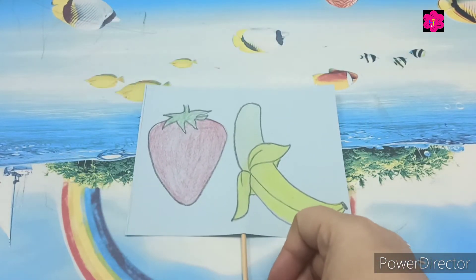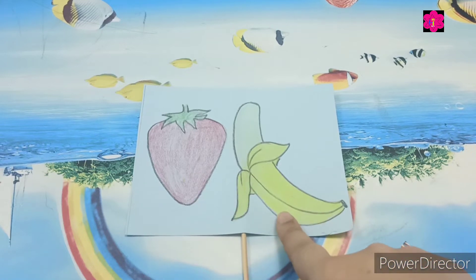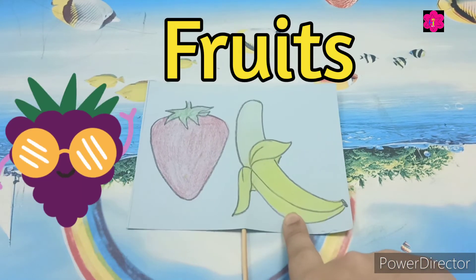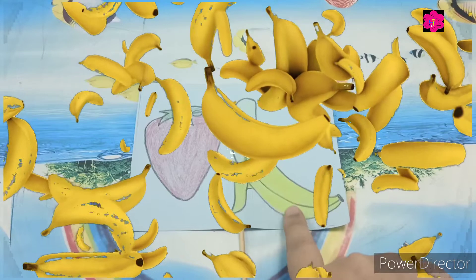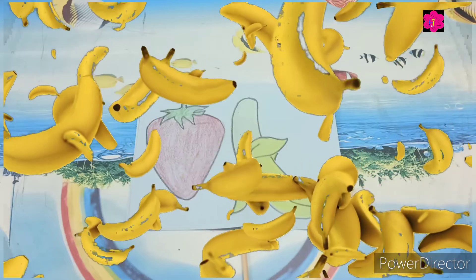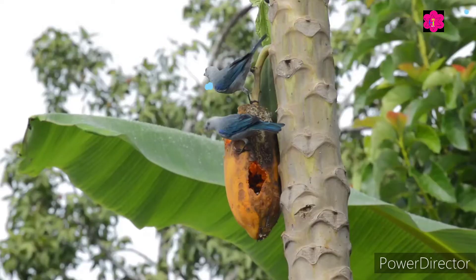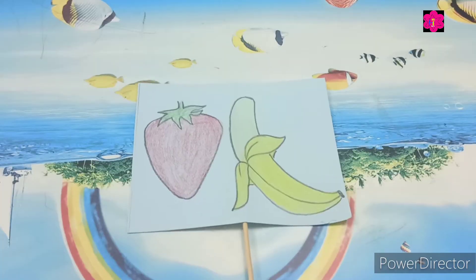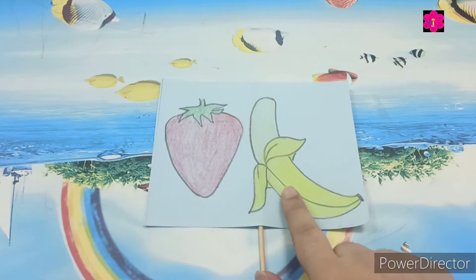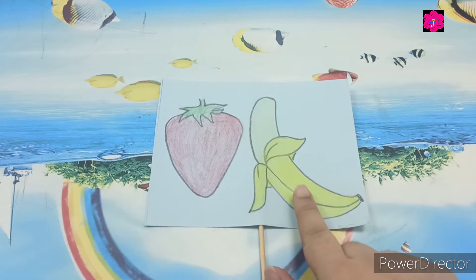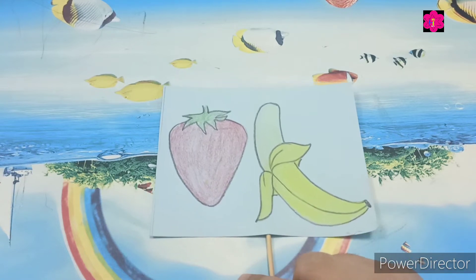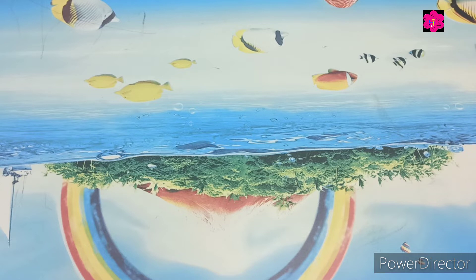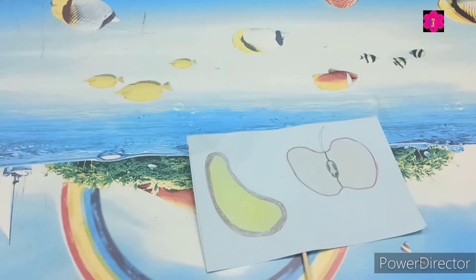What are these? Strawberry and banana — what do we call them? Fruits! Very good. The next part is fruits. The job of the fruit is to hold the seeds. The fruit hangs on the end of the stem.